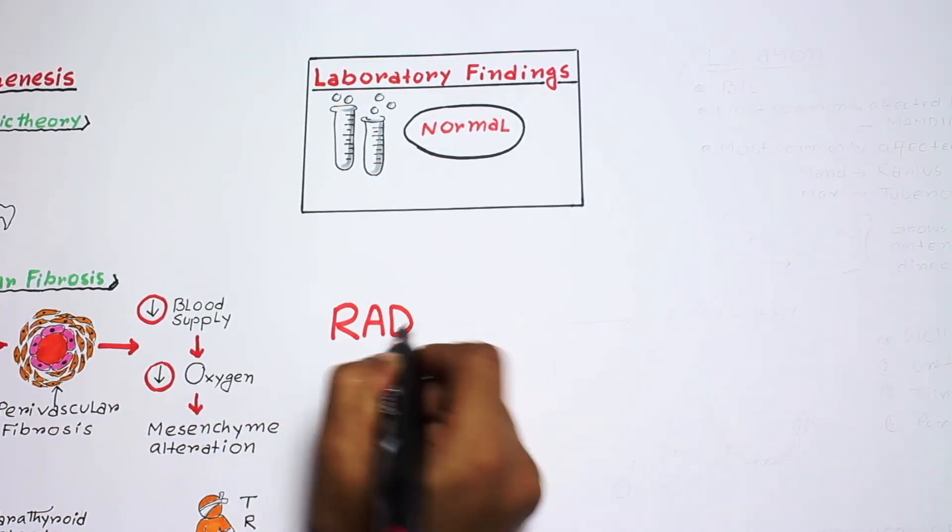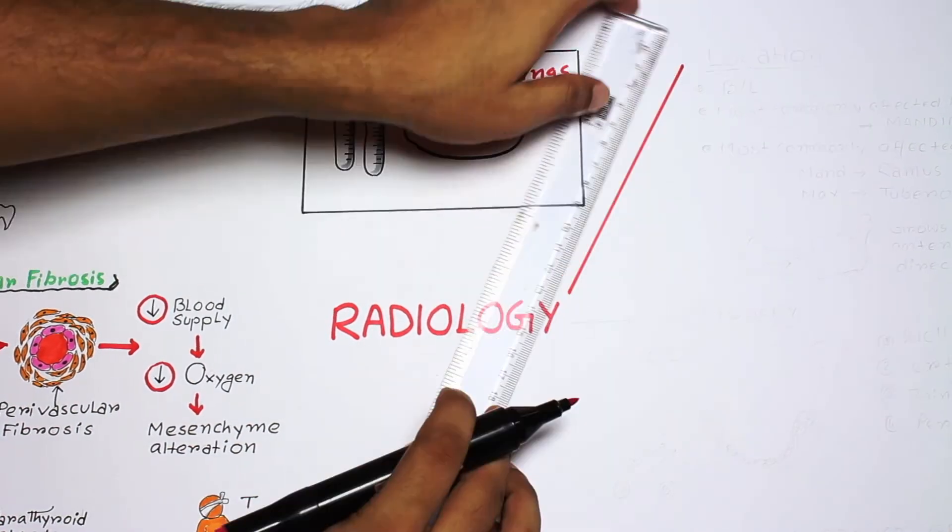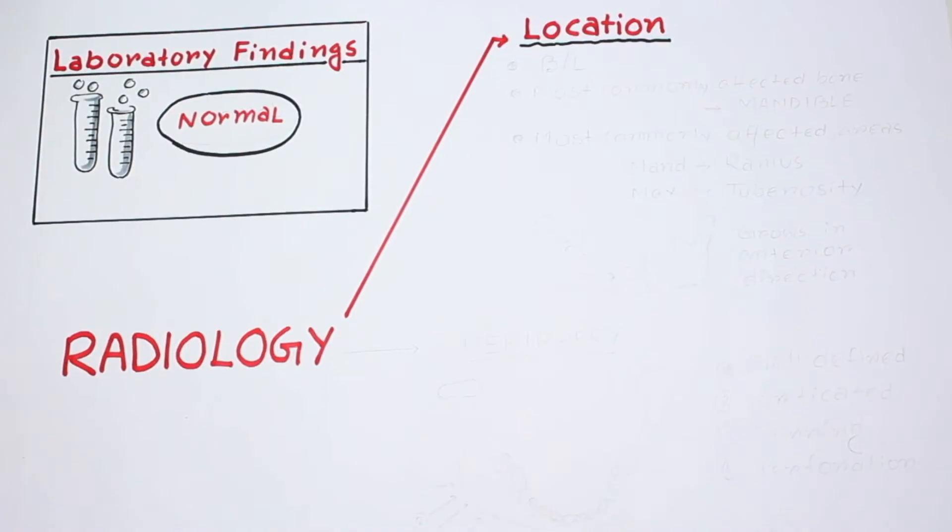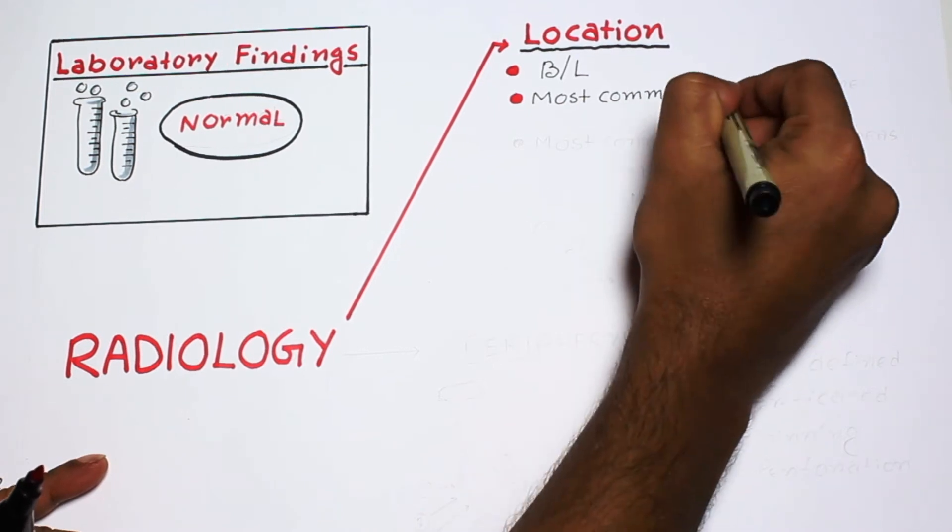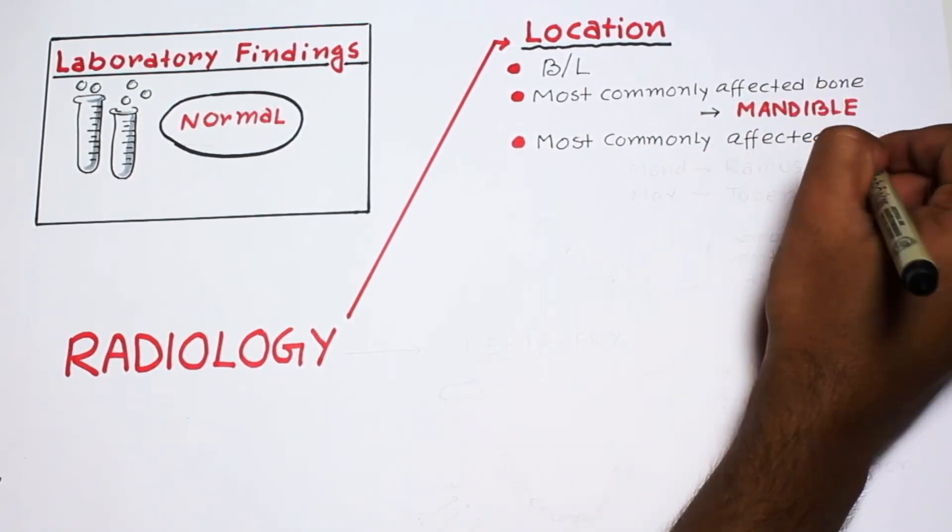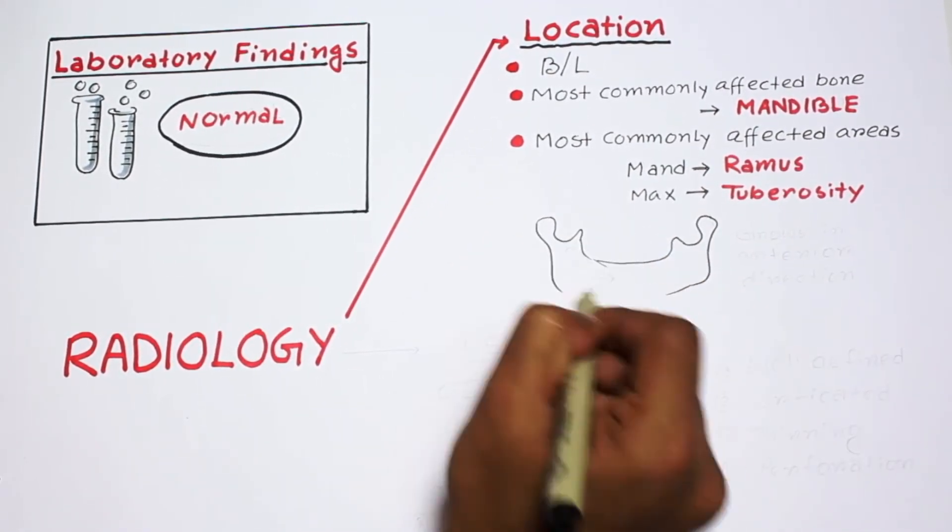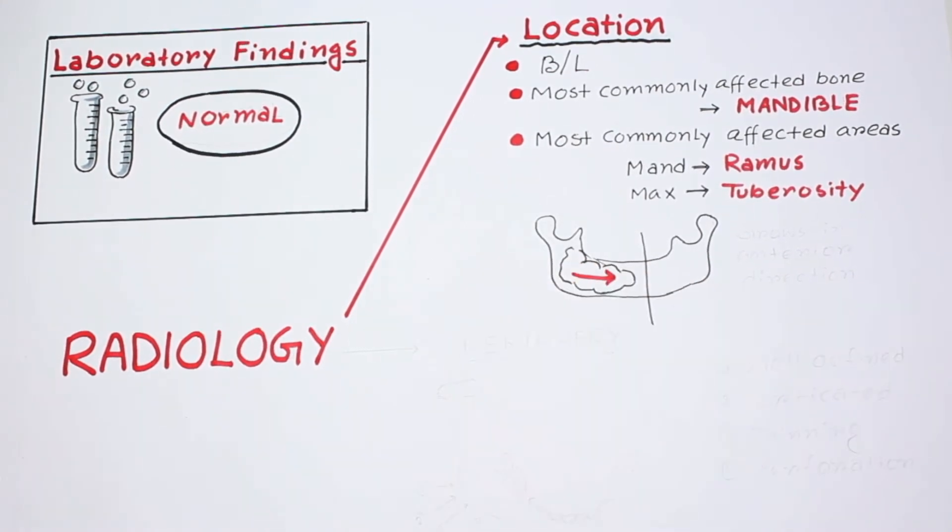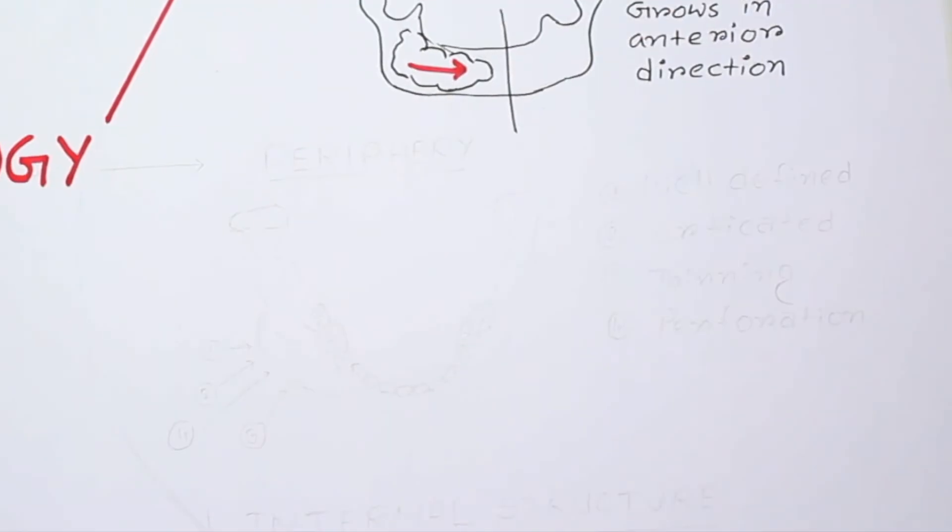Now radiographic findings. Let's divide the discussion into parts. First, location. Most of the time it is bilateral and often affects both jaws. The most commonly affected bone is mandible, and the most commonly affected area in mandible is the ramus, and in maxilla it is the tuberosity area. It grows in anterior direction and in severe cases can extend almost up to the midline.